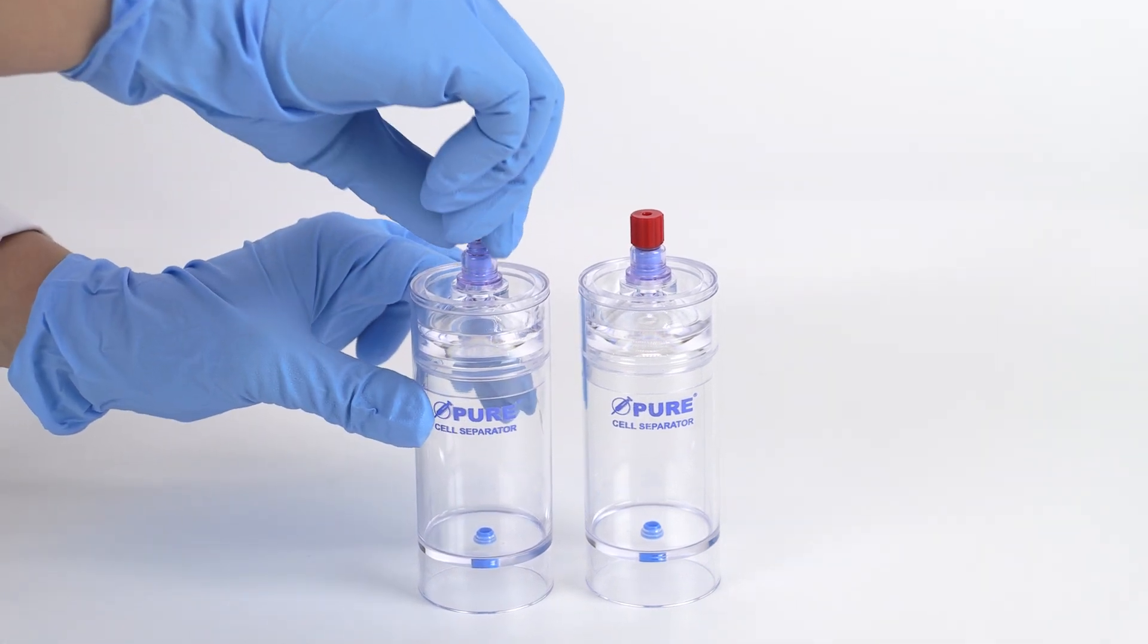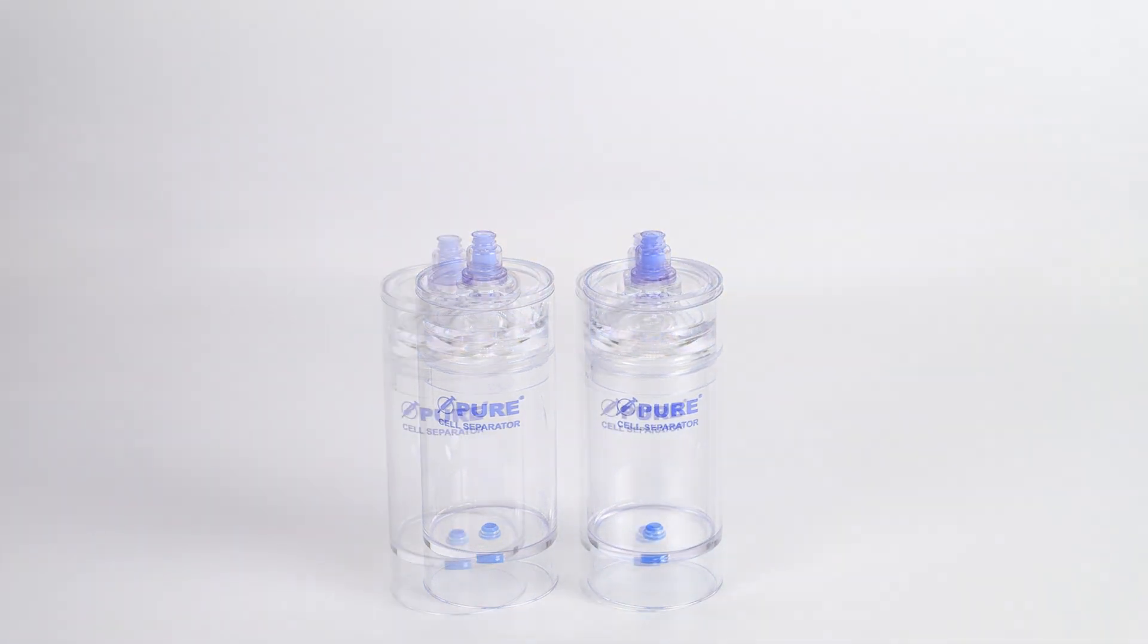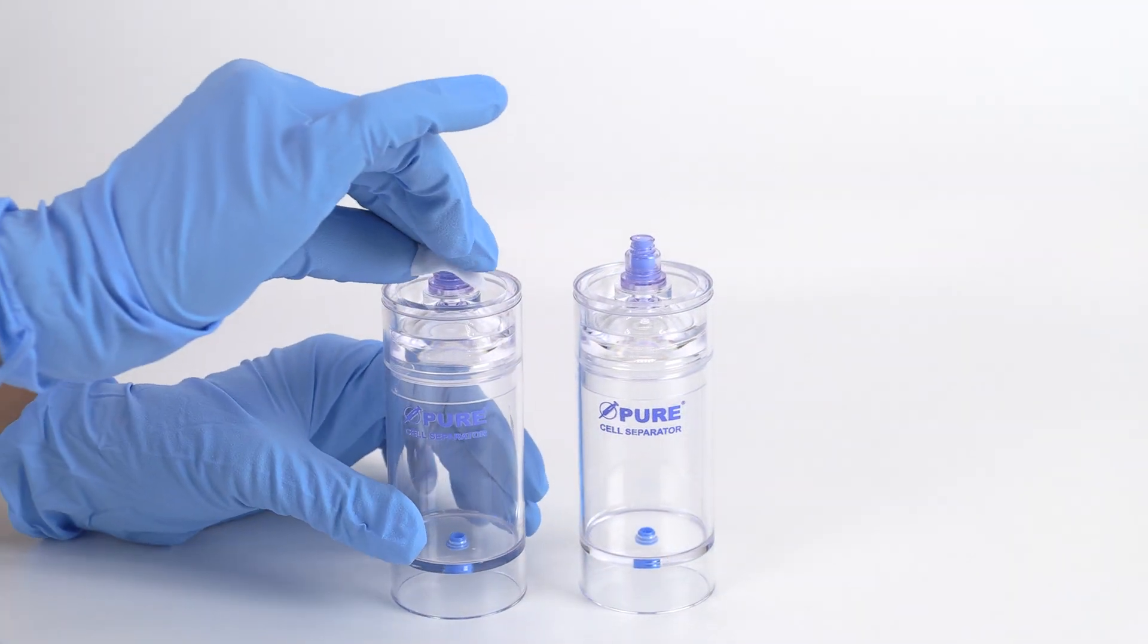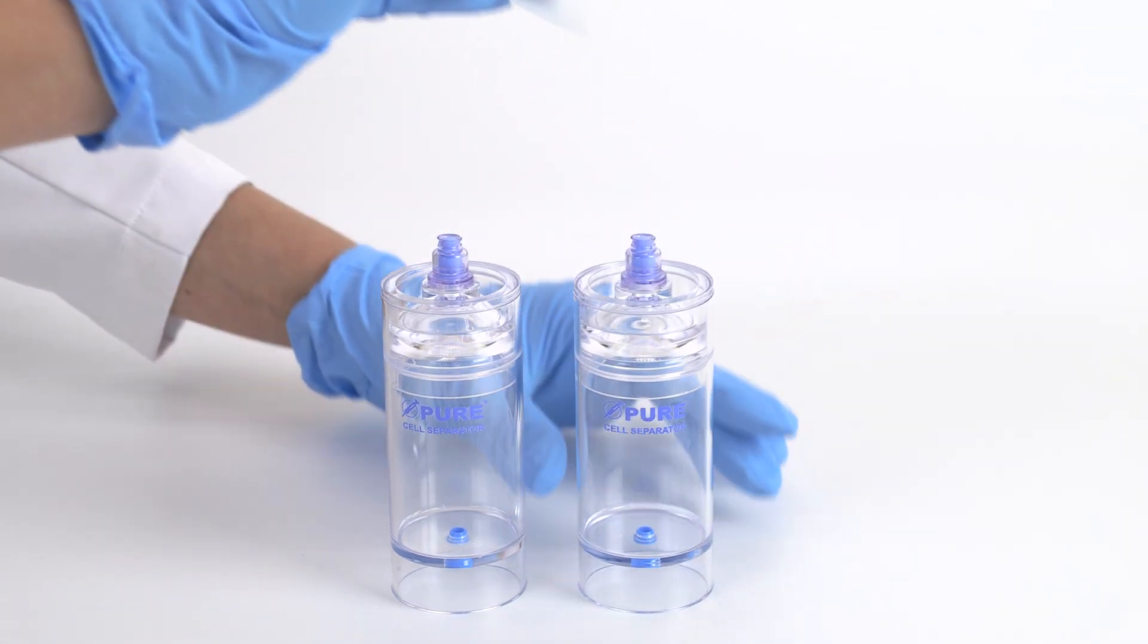To begin, remove the red cap from each needleless valve port of the separator devices. Swab the ports with sterile alcohol before and after accessing with a sterile syringe or cap.